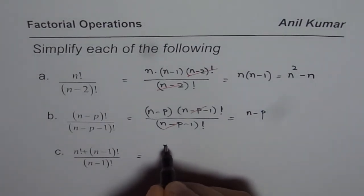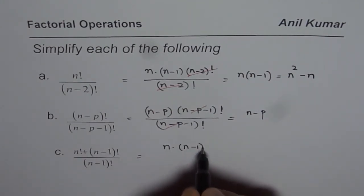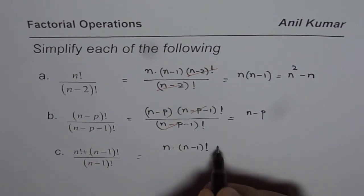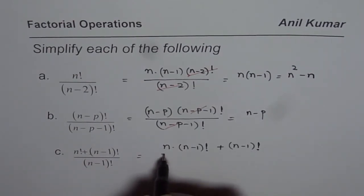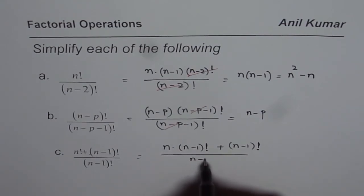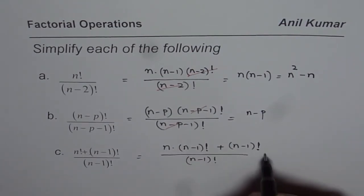The last one here is n factorial, so we have n factorial means n times n minus 1 factorial, plus n minus 1 factorial, divided by n minus 1 factorial.